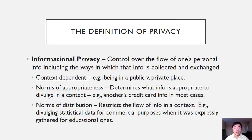Let's look at the definition of privacy. While there are a variety of different definitions, for our interests — focusing on privacy in regards to computer technologies and the internet — we'll be interested in informational privacy. Informational privacy is control over the flow of one's personal information, including the ways in which that information is collected and exchanged.